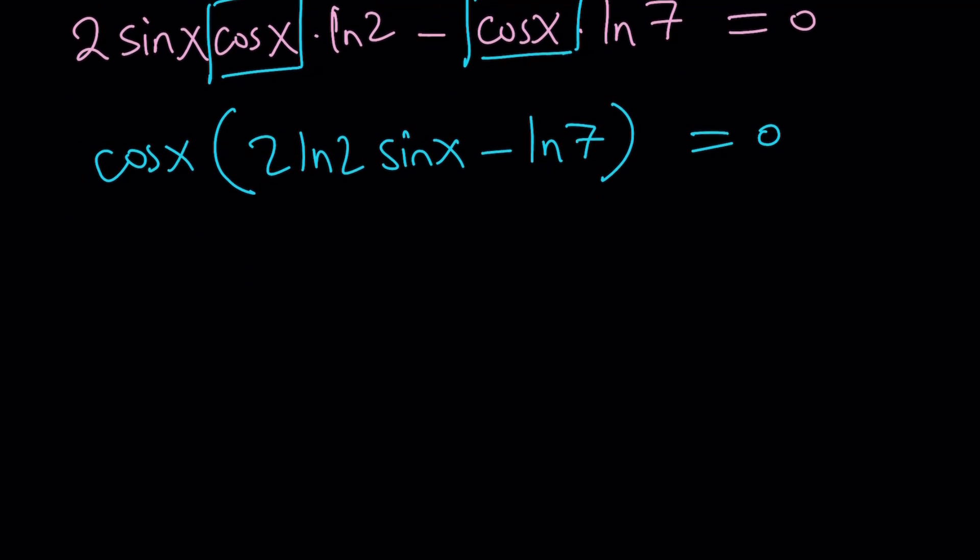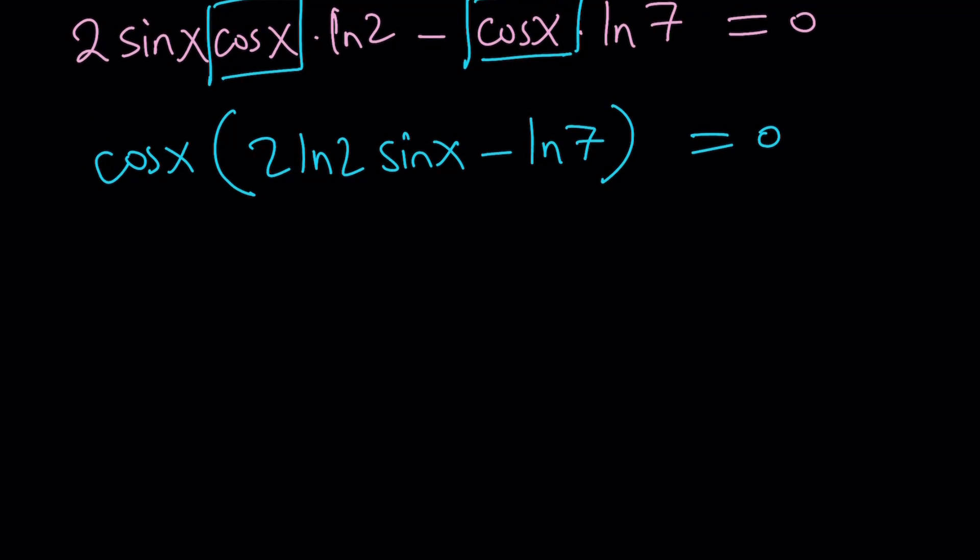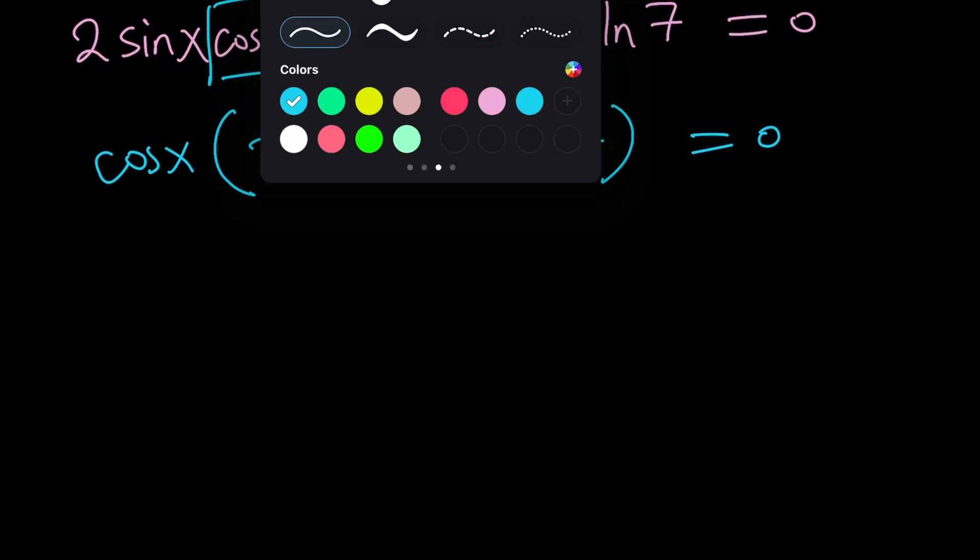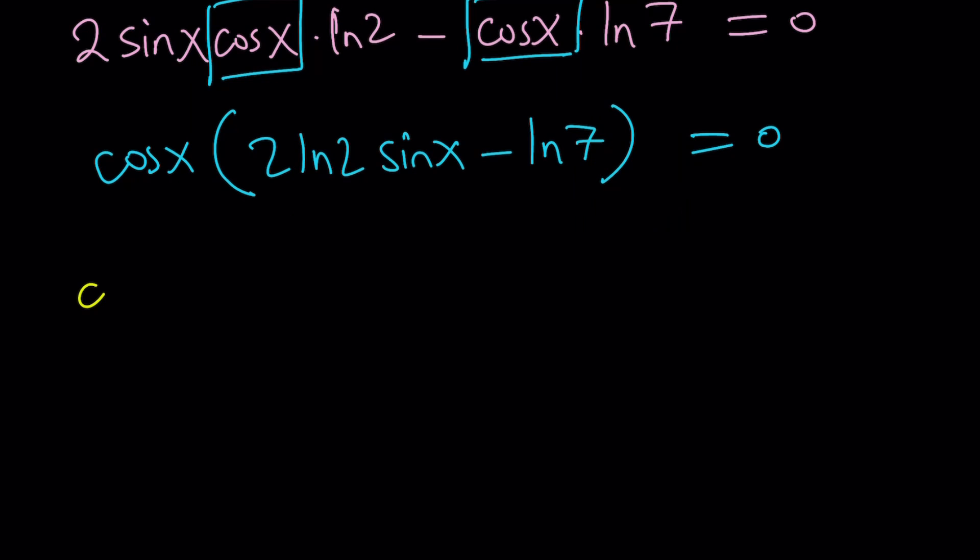Now we have two cases here. First case: cosine x is equal to 0. How do you solve for that? Well, think about the unit circle. Cosine is 0 here and here. In other words, on the y-axis. Because y-axis is for sine. Pi over 2 and 3 pi over 2. Those are the two values.